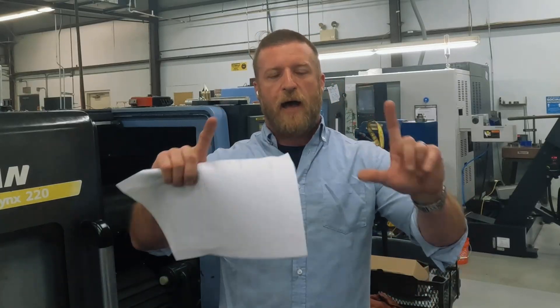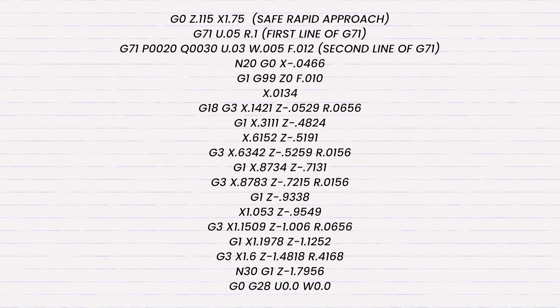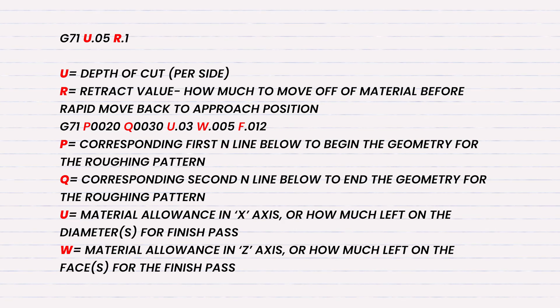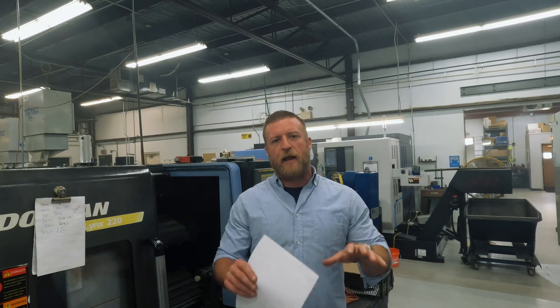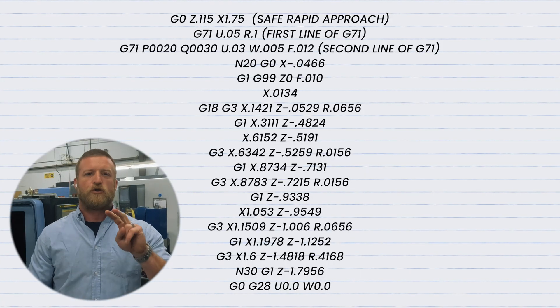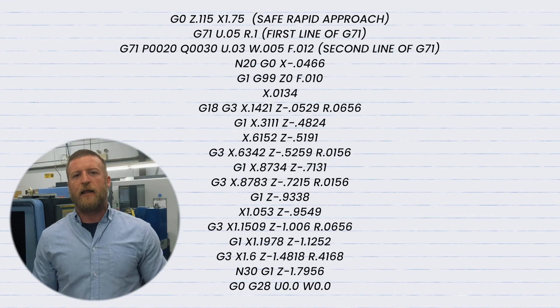Now I'm going to go back to CAM, rewrite the program, dump it in again and prove it out. We're going to be going about that in an interesting way. I'm going to show you what a G71 code looks like at the actual program itself. We're going to dive a little bit deeper and dissect the code. This is a G71 two-line, which is what I like to use.